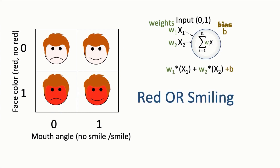If we instead had an OR situation for predicting a bluff — such that there is a bluff if our friend has a red face or is smiling — this is a lenient OR, so it can be only red, only smiling, or both red AND smiling. This corresponds to three data points: red but not smiling, red and smiling, and smiling but not red. This is a linearly separable problem, and the perceptron can find weight values to separate truth from bluff.